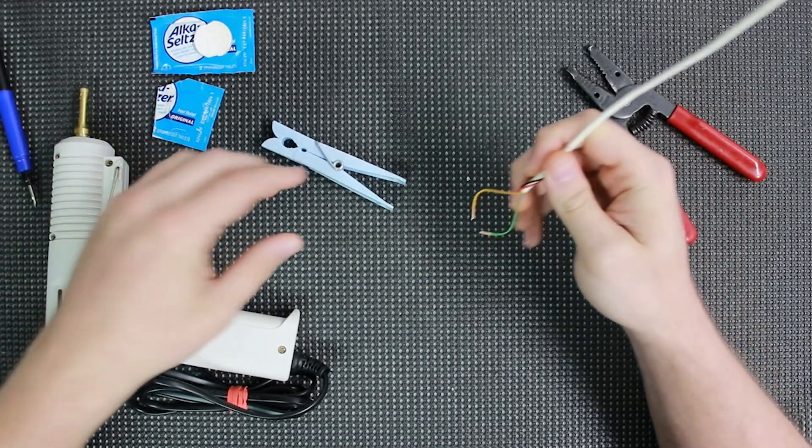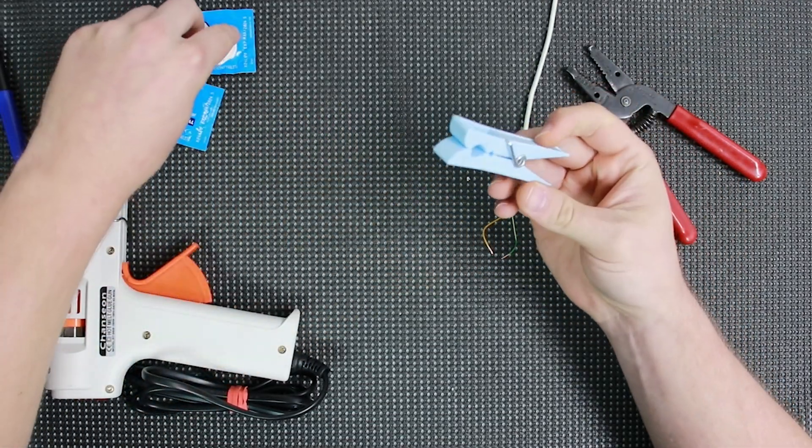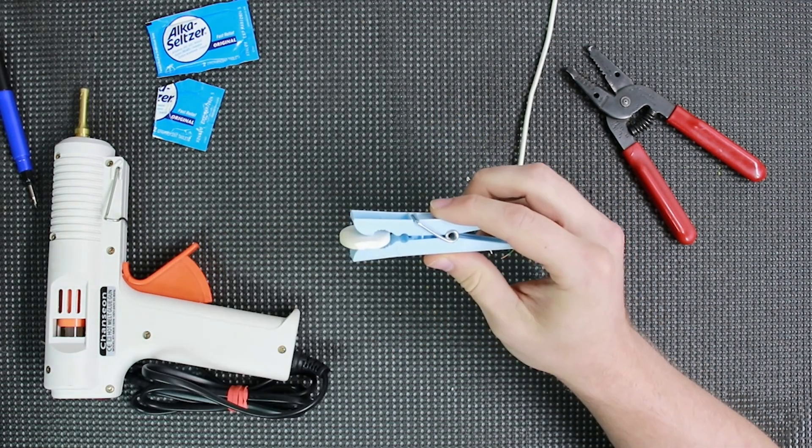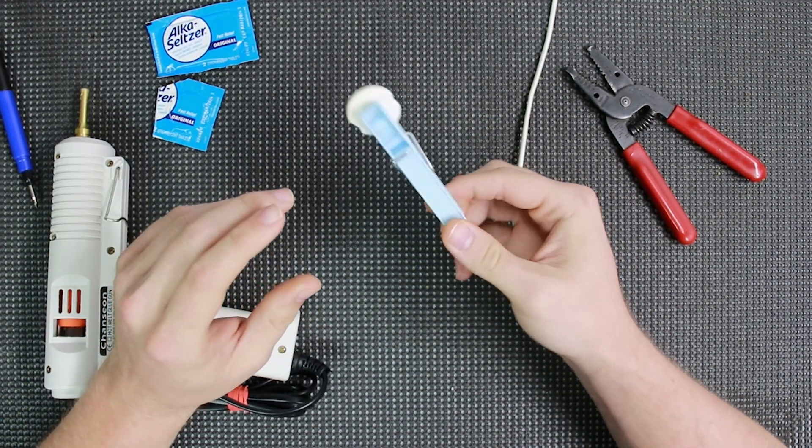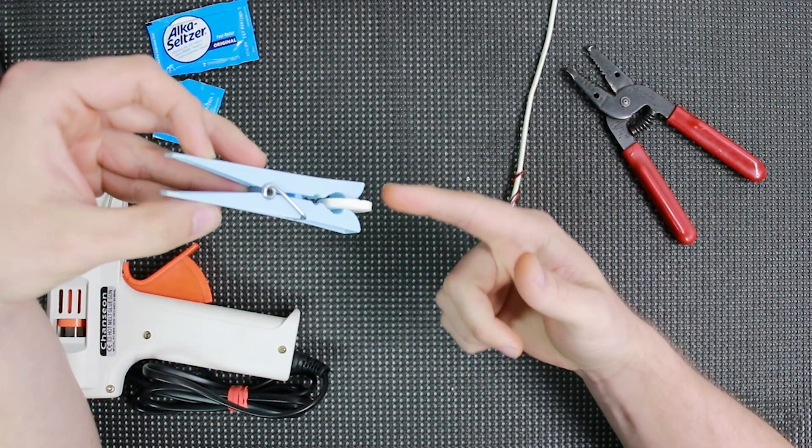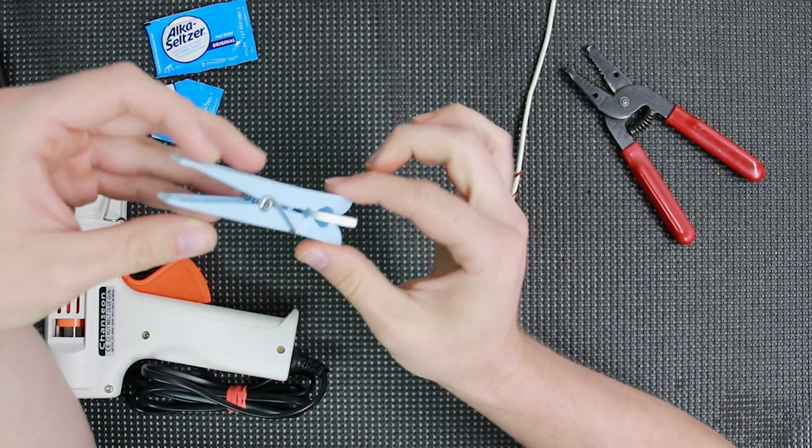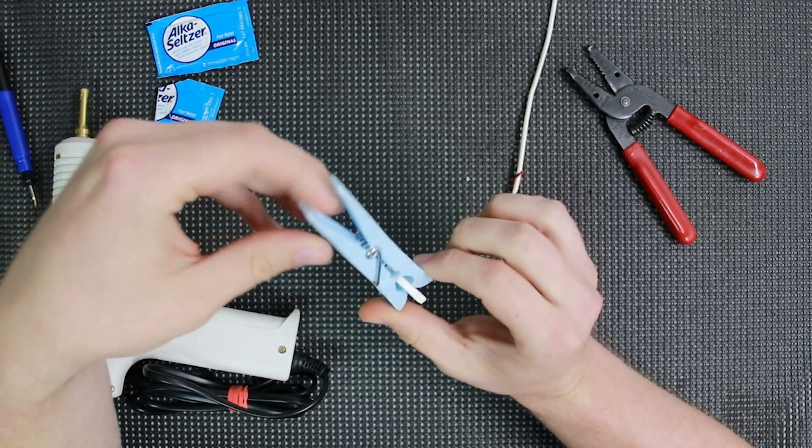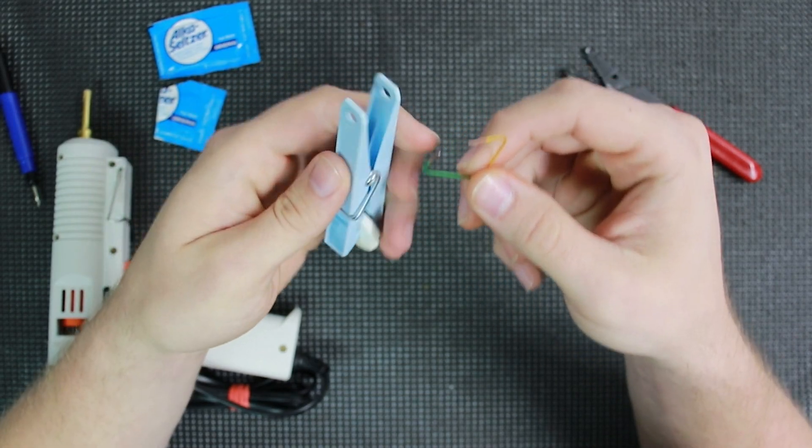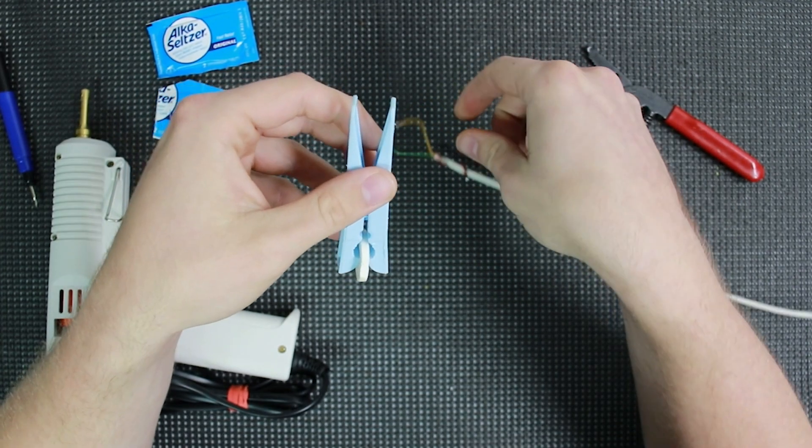And just a quick demo. Basically what's going to happen is if we take our clothespin, put our Alka-Seltzer tablet in there, and if we drop this in water, the tablet's going to melt and it's going to close this clothespin. And all we're going to do with the wire is attach the wire in places where it will react to the pin closing.